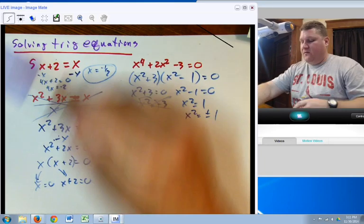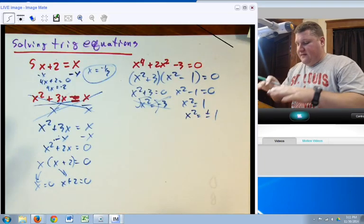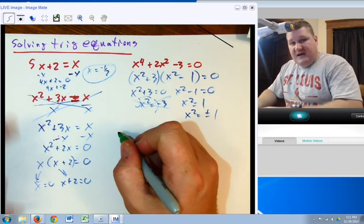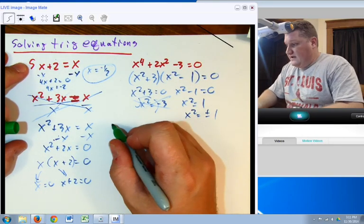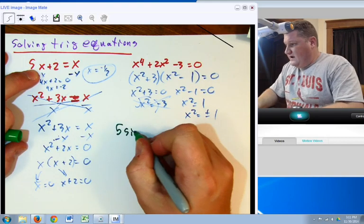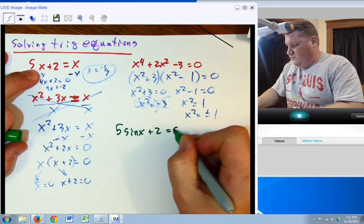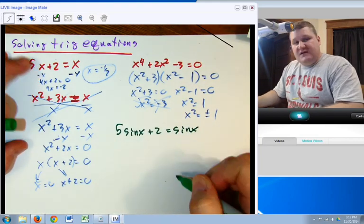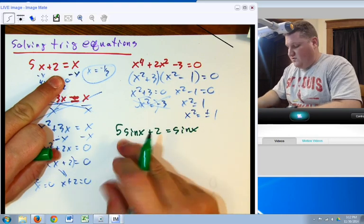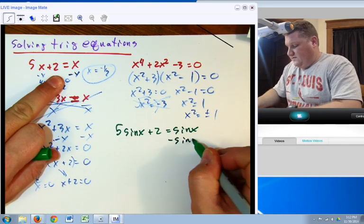Okay. So, at this point, that is basic solving. Now, let's actually go to a little trigonometry. In this case, let's make it, instead of 5x, let's say 5 sin x plus 2 equals sin x. The same thing is going to happen that happened up here. If I take this sin x and move it over here by subtraction...